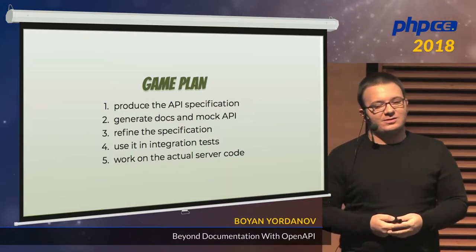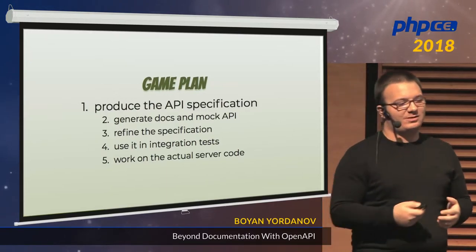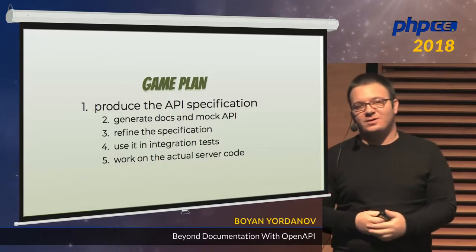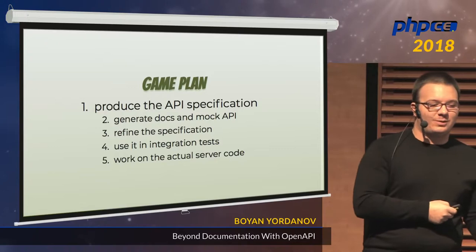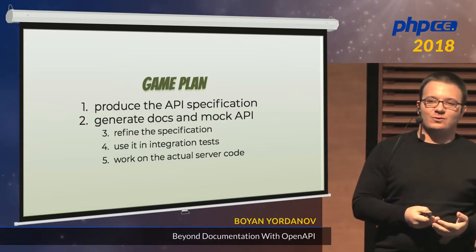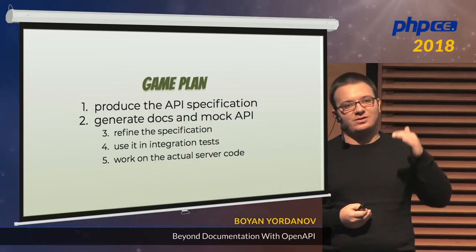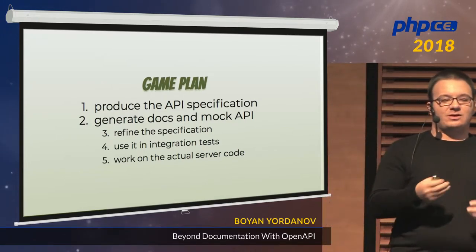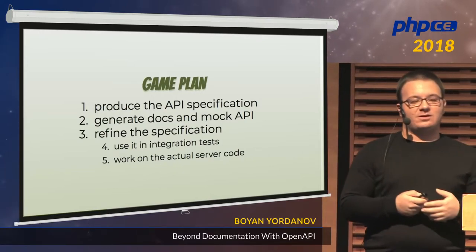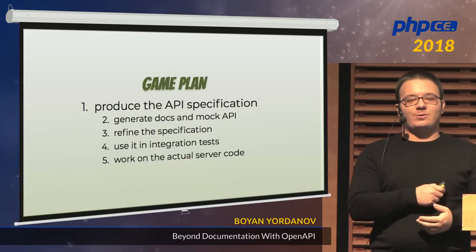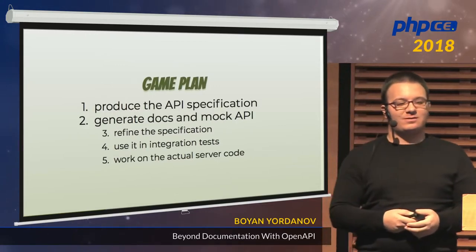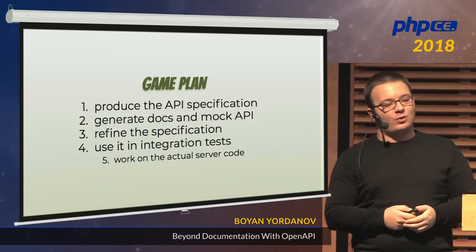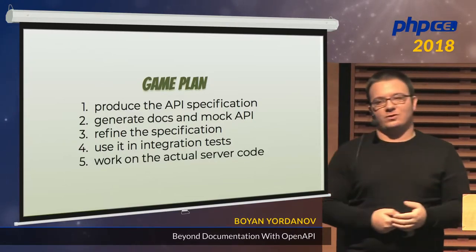So the game plan here is pretty simple — on paper it sounds complicated, but really it's not. We talk to each other, maybe in a meeting or through pull requests on GitHub. We produce a specification about the design we are going to use. Then from that specification, we generate a mock server and some documentation they can follow to actually implement something. The clients start to integrate it, see where it works, where it doesn't, come up with some feedback. Then we go back, refine it, go back to step one, work more on the spec, generate the docs and mock servers again. And once we are happy, we use that spec in integration or contract tests. And only then we start to work on the actual server code.